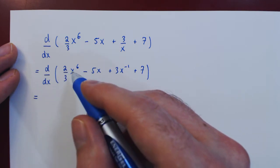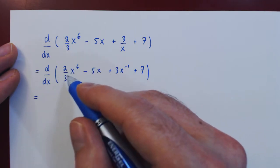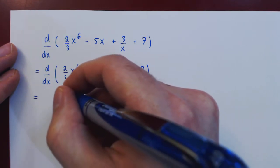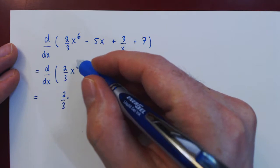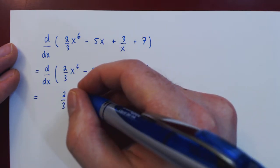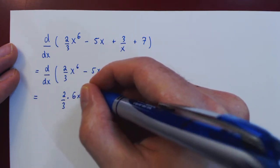So 2 thirds times x to the 6, well 2 thirds is a constant multiple, so it stays where it is. Times, now the derivative of x to the 6, by the power rule, we get 6x to the 5.